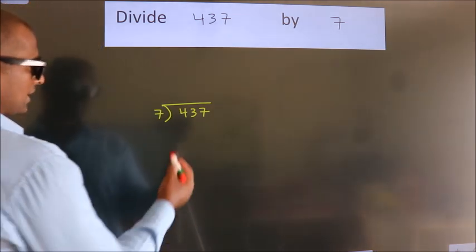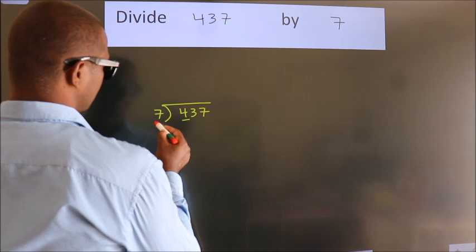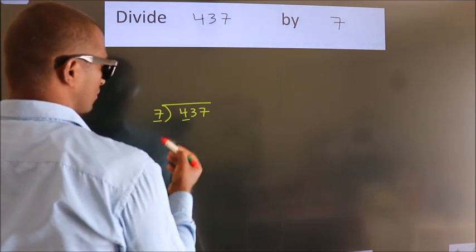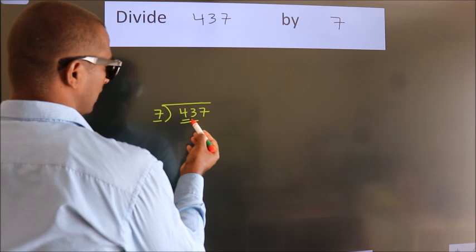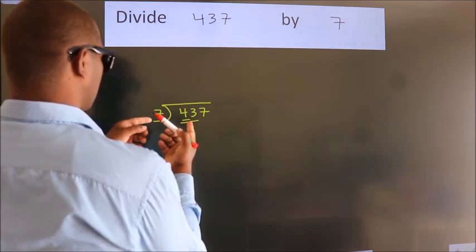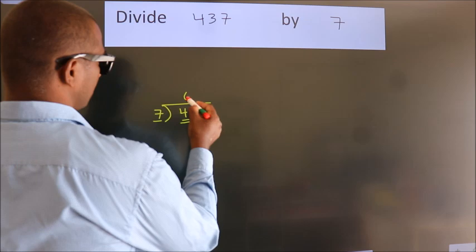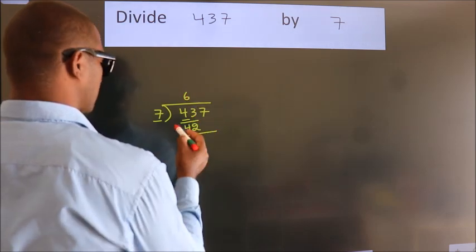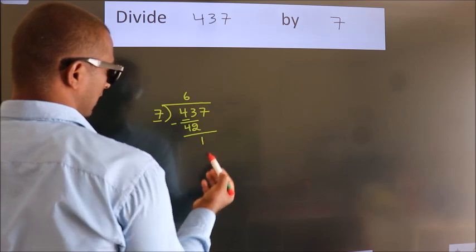Next, here we have 4, here 7. 4 is smaller than 7, so we should take two numbers: 43. A number close to 43 in the 7 table is 7×6=42. Now we subtract and get 1.